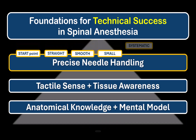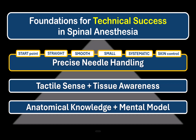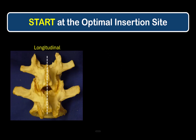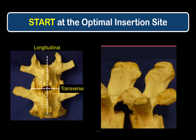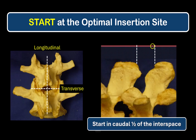Precise needle insertion and handling is the third foundational skill set to master if you want to optimize for success in spinal anesthesia, and it begins with starting in the right place. I'm not just talking about the longitudinal axis and being in the midline of the spine, but the transverse plane — and this can be critical to success whether you're using midline or paraspinous approaches. In general, you always want to start in the caudal half of the interspinous space, close to the lower spinous process. In the difficult patient with narrowed interspinous spaces, this choice of insertion site becomes even more critical because there's only a very small range of trajectories that will allow the needle to navigate all the way to the interlaminar space. The paraspinous approach is much more forgiving in this respect.